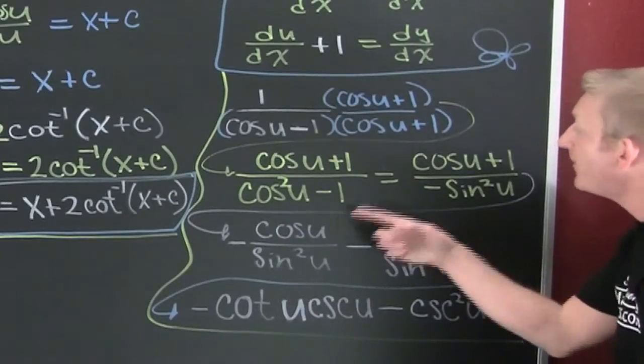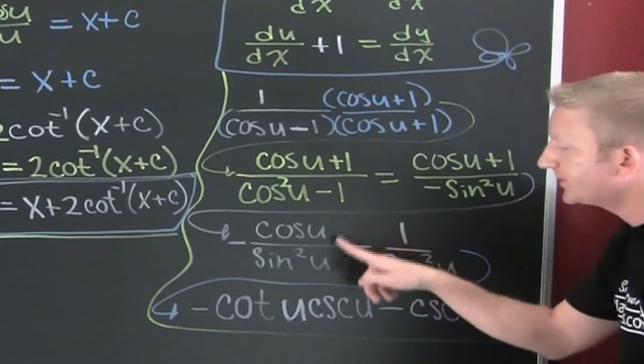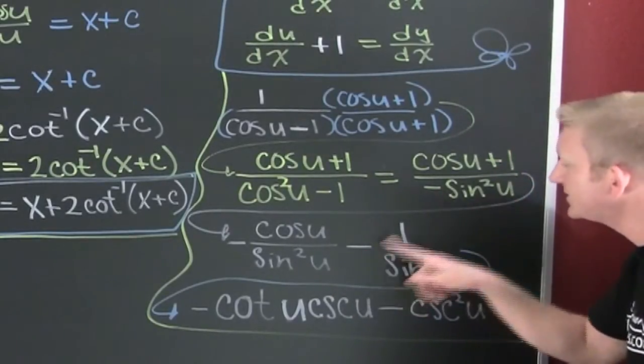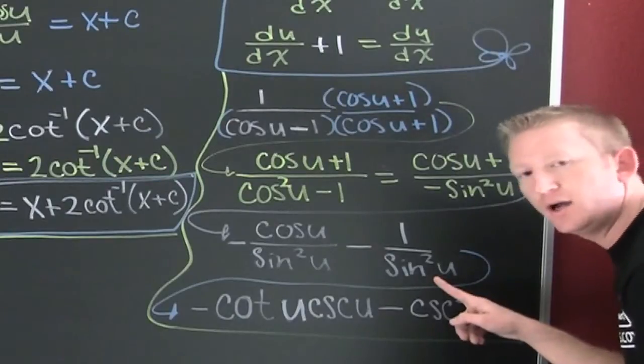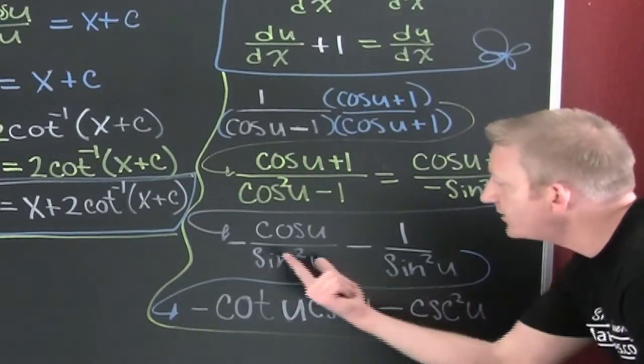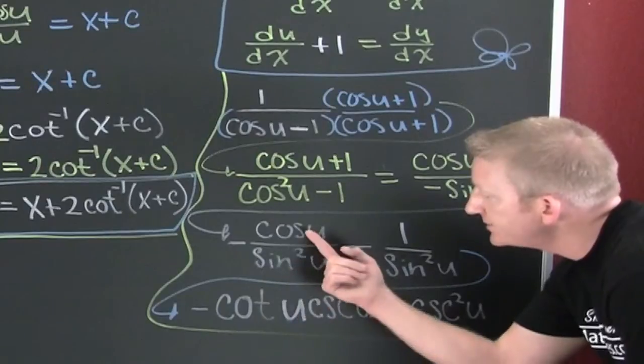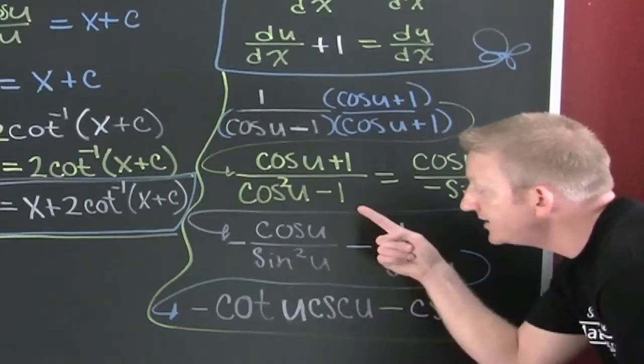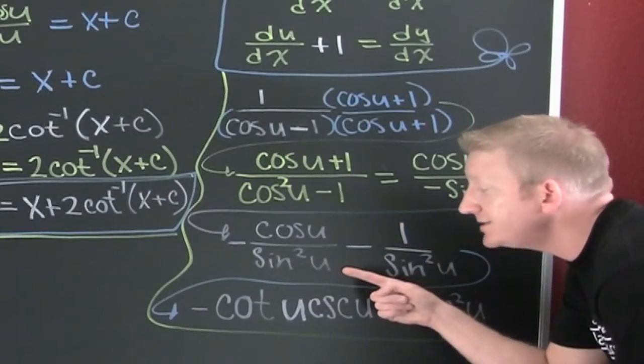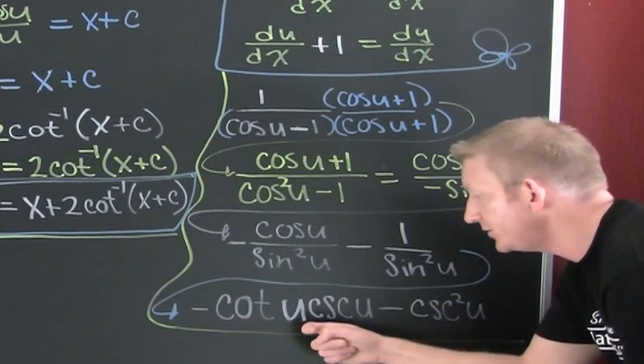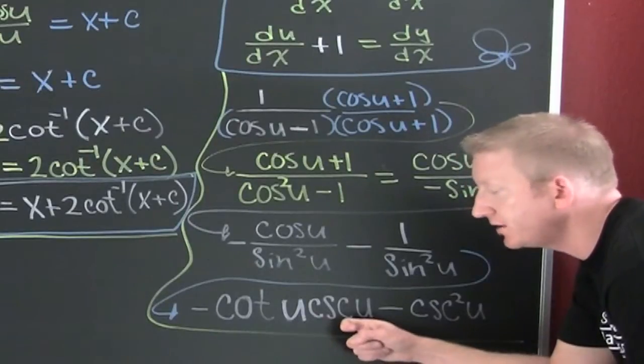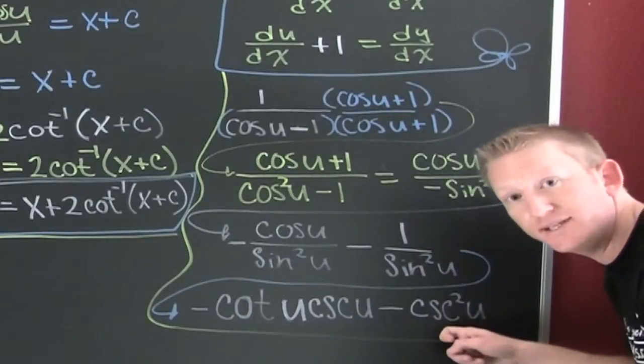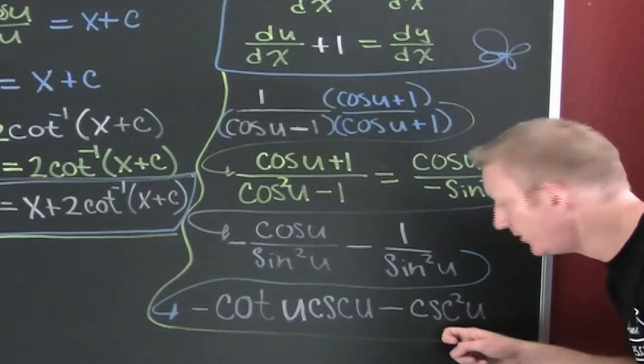I have minus the cosine of u over sine squared u and minus one over sine squared u. If I do that I'm going to have minus the cotangent of u times the cosecant of u—integrable. This is cosecant squared—integrable.